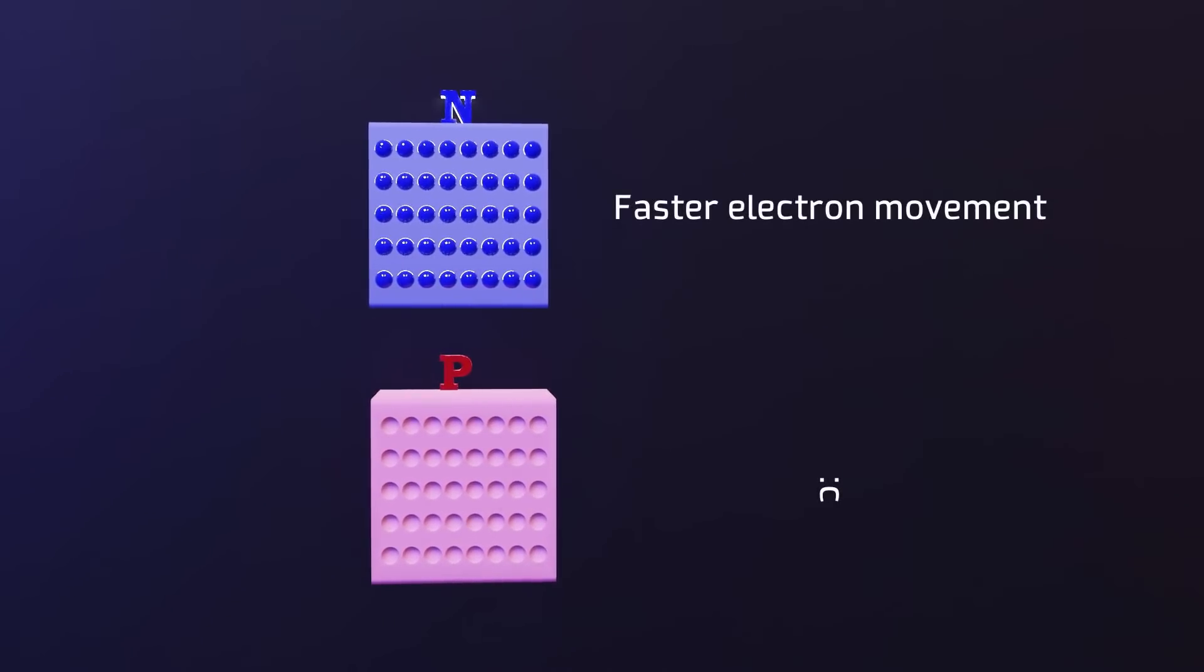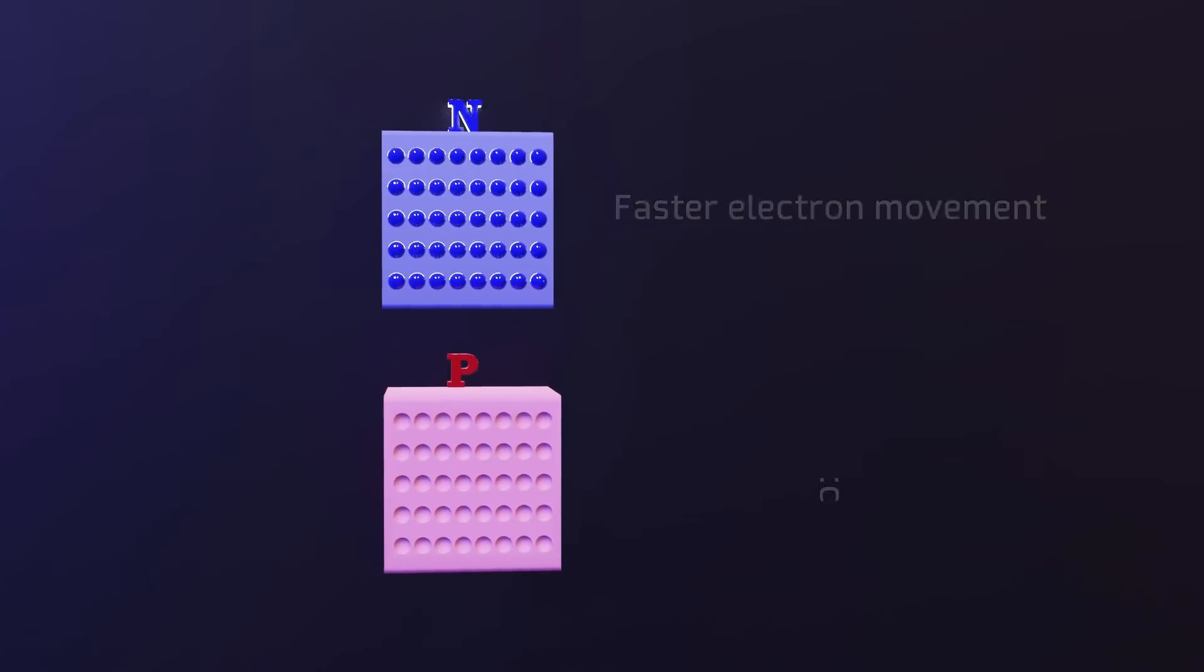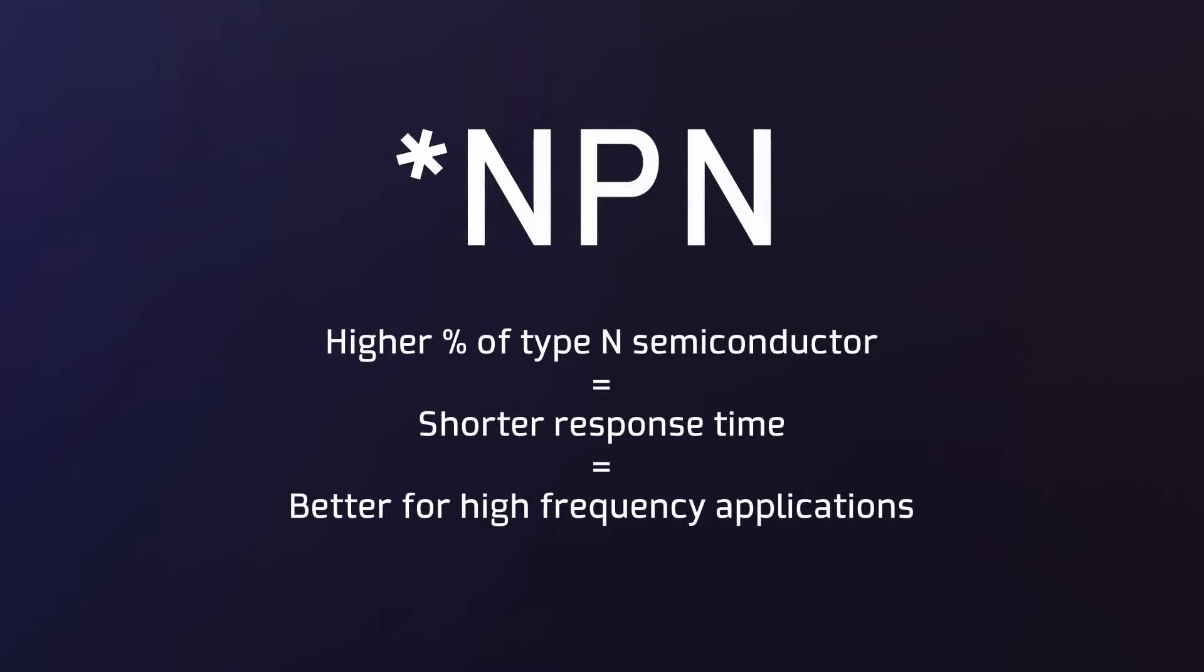The second difference is that since the electrons can move faster through a semiconductor than the holes, an NPN transistor, which is mostly composed of semiconductors type N and therefore has more electrons, will have a shorter reaction time being more useful for situations that require working with high frequency signals.